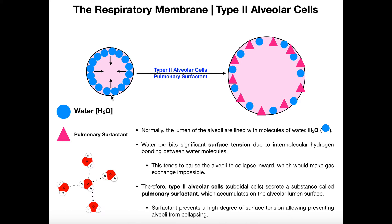Collectively — not just one hydrogen bond, but collectively — with all the molecules of water lining the inside of the lumen of that alveolus, they're going to want to collapse the alveolus. That's why I've drawn these arrows all going towards the center. If you had no protective mechanism, the surface tension due to hydrogen bonding would cause the alveolus to collapse inward, and a collapsed alveolus is not good at gas exchange.